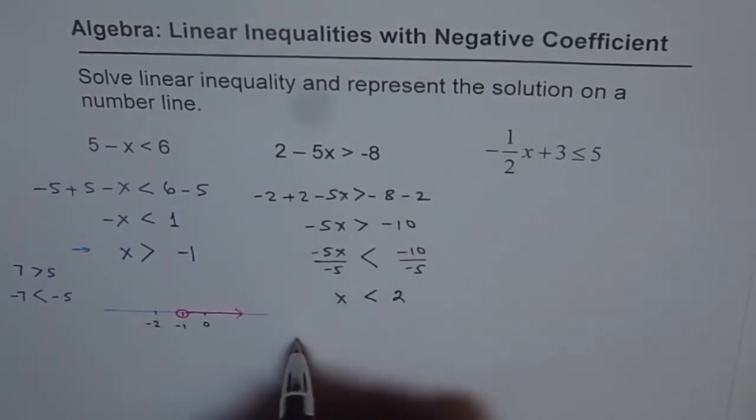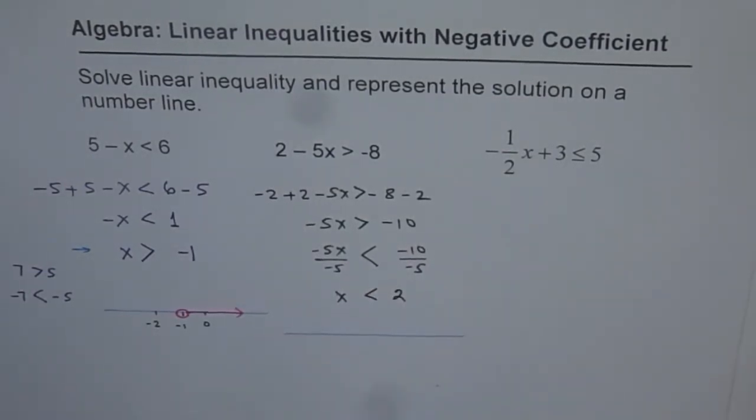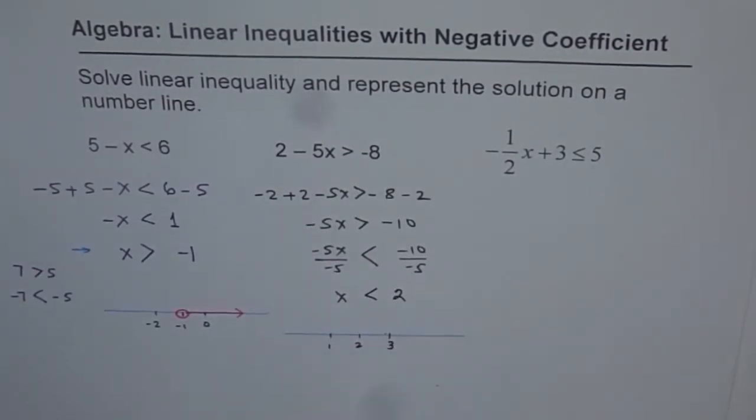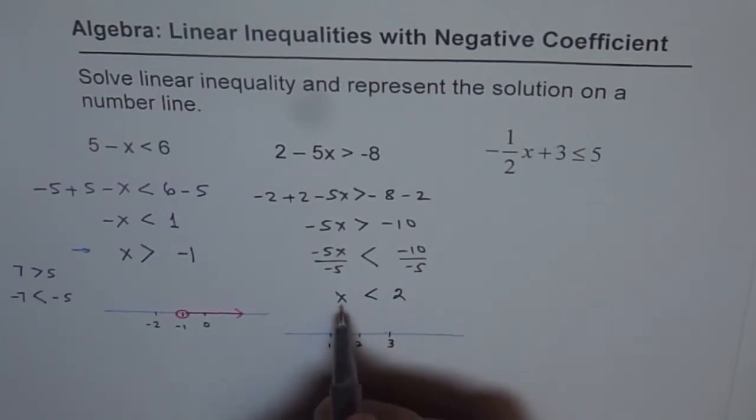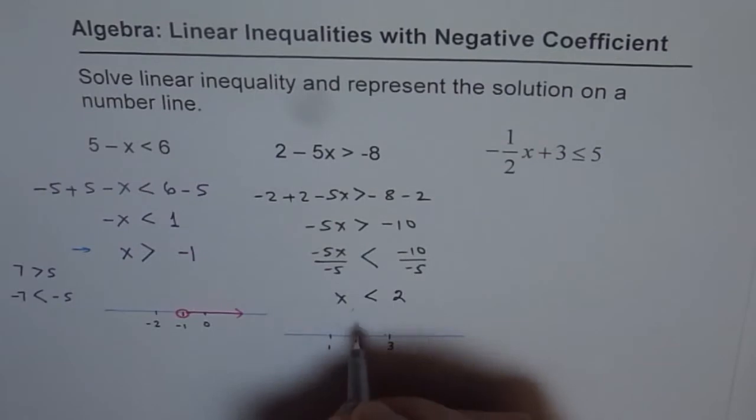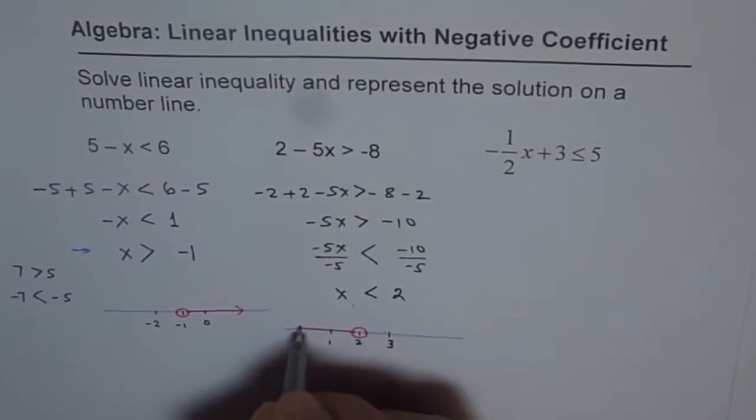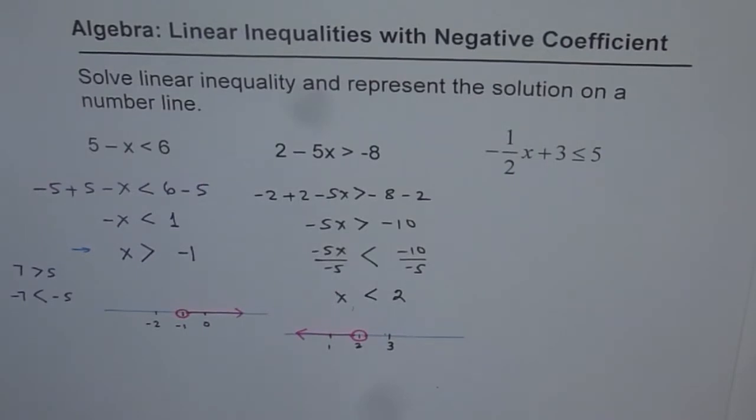And on our number line, we can show this solution as, let me write down the numbers 1, 2 and 3. 2 is our critical number. And we are looking for a solution which is x is less than 2. So it's not filled. It's an open hole and the arrow points towards the left. So that is the solution.